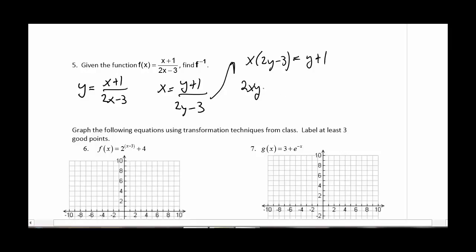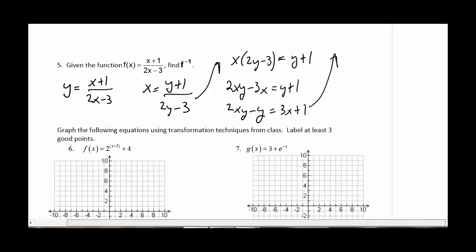So 2xy minus 3x equals y plus 1. And then I'm going to bring the y's on the same side and get rid of the 3x and move it to the other side. So the 2xy, I'll keep where it is. I'll bring that y over, which means it's subtract. And the 3x I'll bring over and that's going to be plus. So at this point, I notice that I've got y's on both terms. And so I can factor out a y. Leaves me with 2x minus 1 equals 3x plus 1. And then I want to divide by 2x minus 1. So y equals 3x plus 1 over 2x minus 1. And that is our inverse.